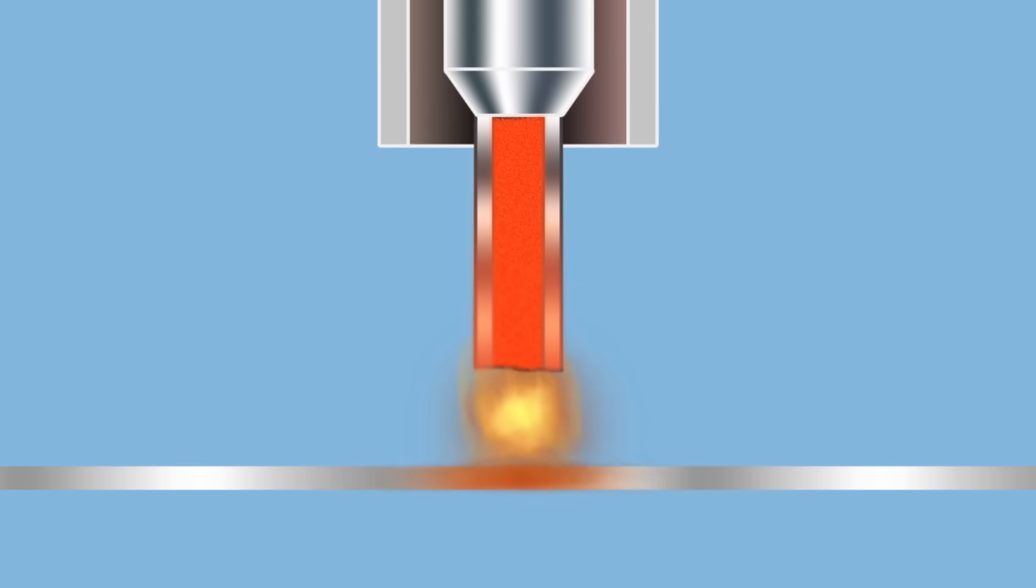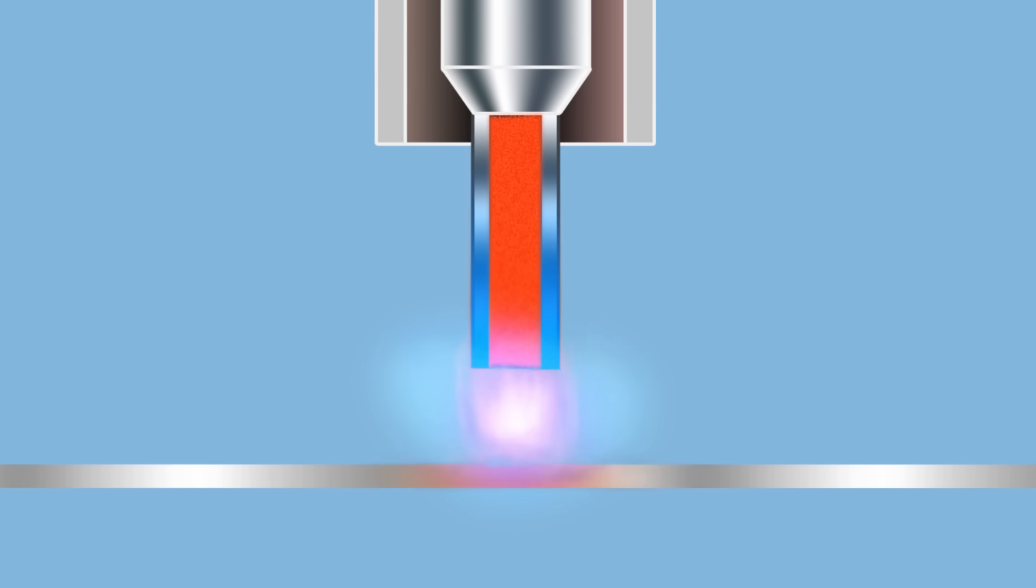With flux core, the metal wire is surrounded by a solid material that burns and releases a protective gas around the weld. This protects the weld and stops it from reacting with the oxygen in our atmosphere, which would cause corrosion.